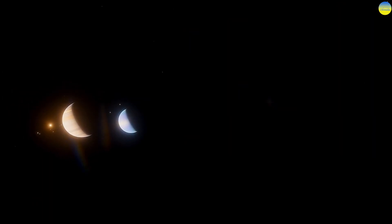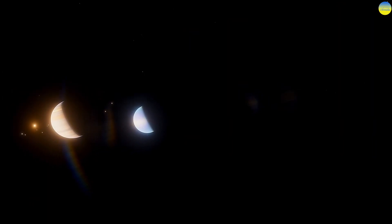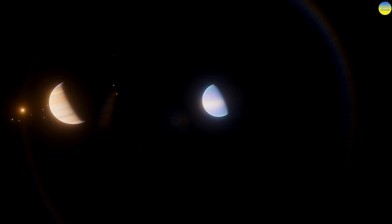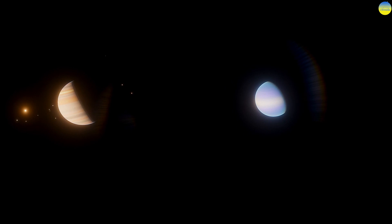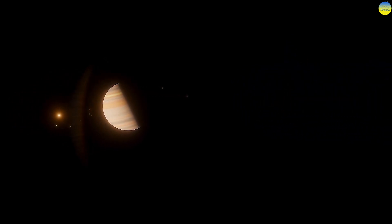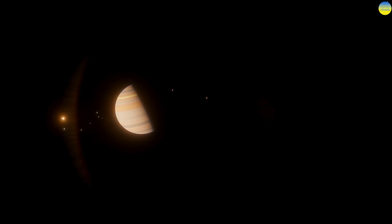During the year, from two to five eclipses of the Sun occur on Earth, of which no more than three are complete eclipses. On average, a total eclipse occurs once every 370 years in the same place. But there are exceptions.